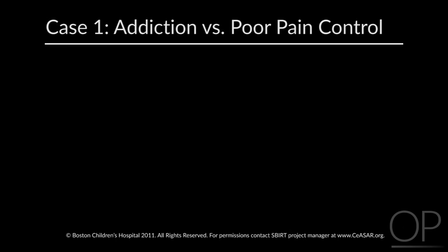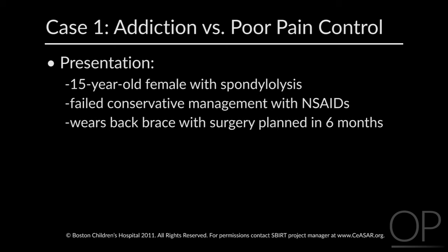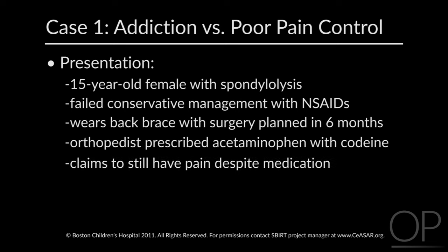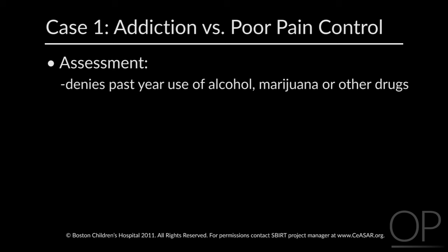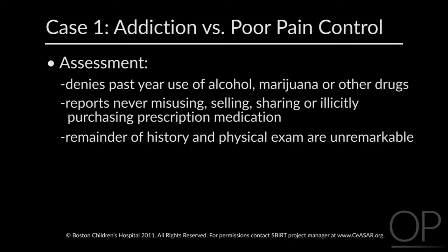Case one: an individual presenting with need for management of chronic non-malignant pain, where the doctor must decide if the patient has become addicted or has poor pain control. Lisa is a 15-year-old athlete with spondylolysis who failed conservative management with NSAIDs. She's wearing a back brace and surgery is planned in six months. Her orthopedic surgeon prescribed acetaminophen with codeine for her back pain. She comes to her primary care physician saying she continues to have pain despite her medication. Interviewed privately, she denies past-year use of alcohol, marijuana, or other drugs, has never misused, sold, or shared her prescription pain medication, and her history and physical exam are largely unremarkable.